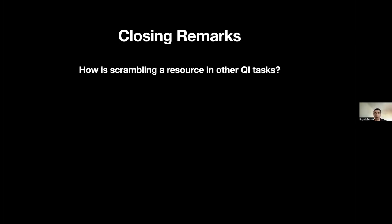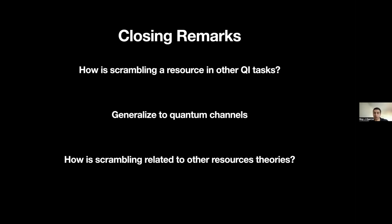I'd like to end with some closing remarks. We've taken our scrambling resource theory and given two applications, but we should expect more because scrambling has many connections to different areas of quantum information. We're excited about taking this resource theory and showing how our functions can be used to bound other properties in quantum information tasks. We'd also be interested in generalizing this theory to include quantum channels to understand noise effects in scrambling. Lastly, we've shown a connection between the scrambling resource theory and the resource theory of magic, but we think there should be connections to other interesting quantum resource theories too.